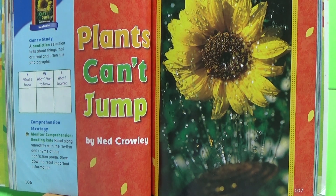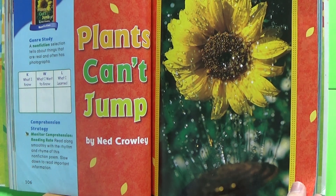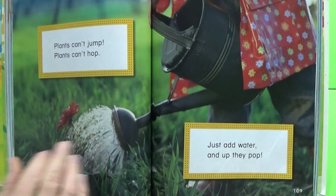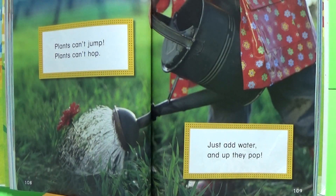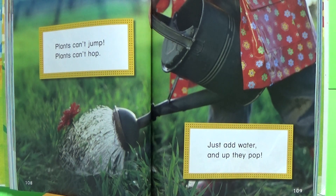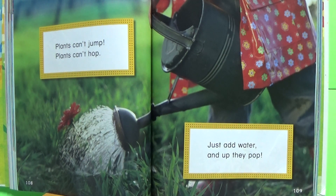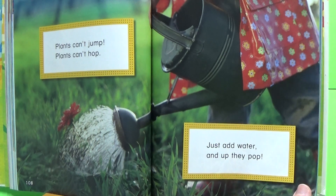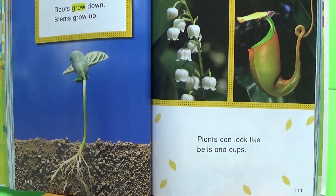Plants can't jump, by Ned Crowley. Plants can't jump, plants can't hop. Just add water and up they pop. Roots grow down, stems grow up.